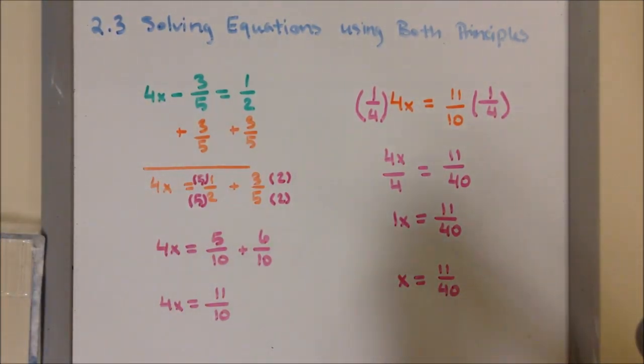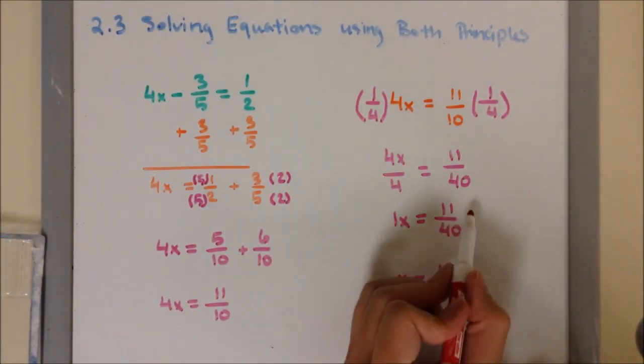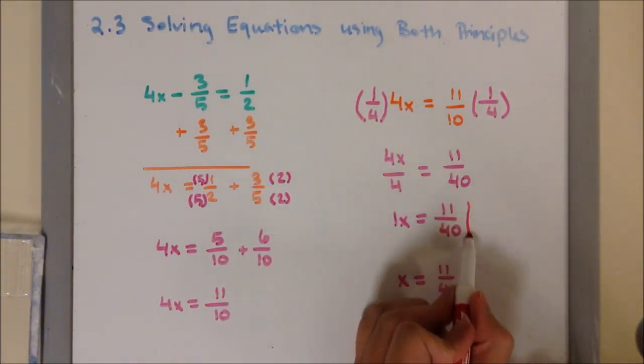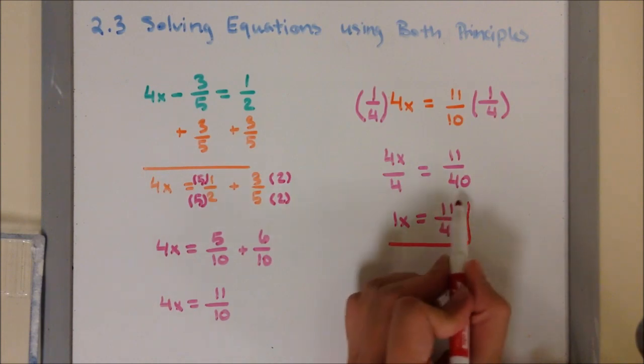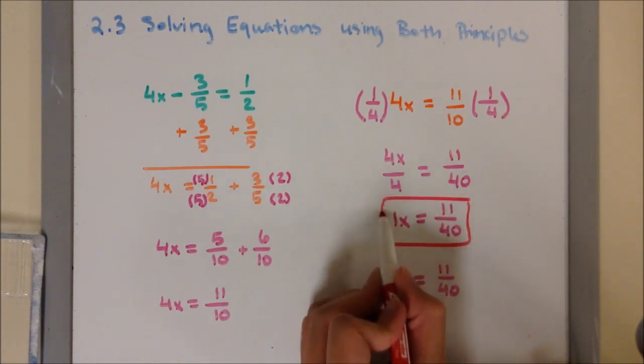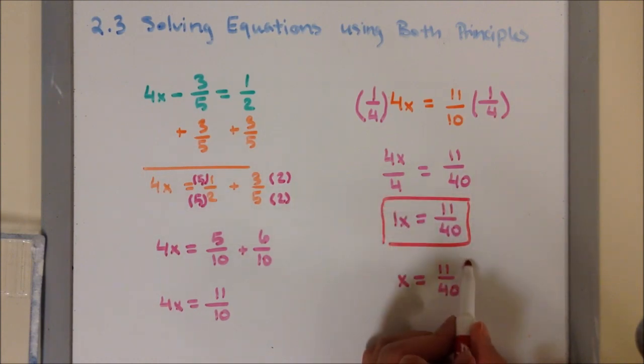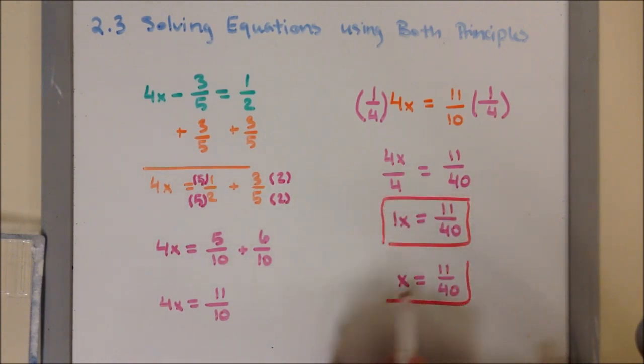So, 1x equals 11 over 40 — that's our final answer. Or, x equals 11 over 40.